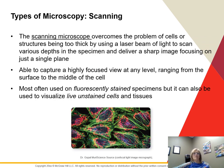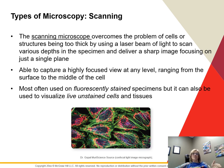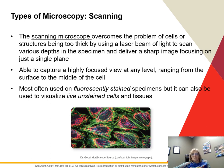Scanning microscopes help us get past the limitation that some structures in a cell are too thin. A laser beam is used to scan different depths of the specimen, giving a very sharp image in a single plane. This is often used with fluorescent stain but can also be used to visualize live unstained cells and some tissues.